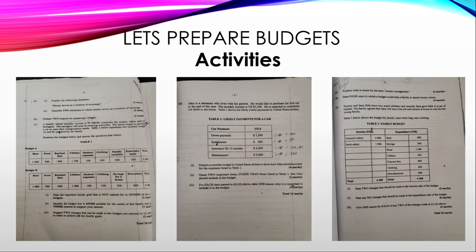Question one: state the important family goal that is not catered for in either of the two budgets. To find this, go back to the scenario. The scenario states that the family hopes to purchase a car to meet their transportation needs. Looking at both budgets, you do not see savings for a car included anywhere. So the answer is: buying a car is the family goal that was not included or catered for in either of the budgets.